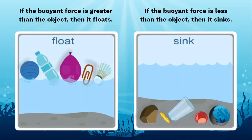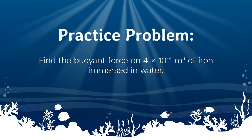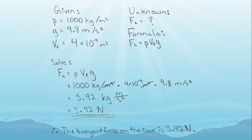Determining if an object floats is pretty simple. If the weight of the fluid displaced is greater than the weight of the object, then it floats. If the weight of the fluid displaced is less than the object's weight, then it sinks. Let's try another problem — if you want to solve it yourself, press pause. Find the buoyant force on 4 × 10⁻⁴ meters cubed of iron immersed in water. Here's the solution — did you get it right? If so, great job. If not, keep working at it — we believe in you. Press pause to look over the solution.